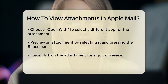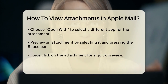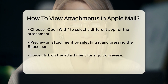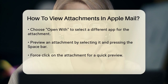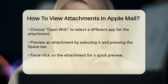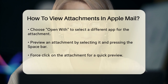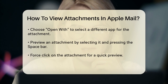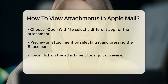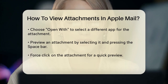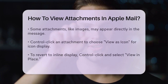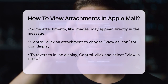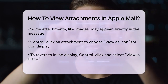Sometimes you might not want to open the attachment right away. In that case, you can preview it without opening it. To do this, select the attachment and press the space bar, or force-click on the attachment. This will give you a quick look at the contents without fully opening the file.